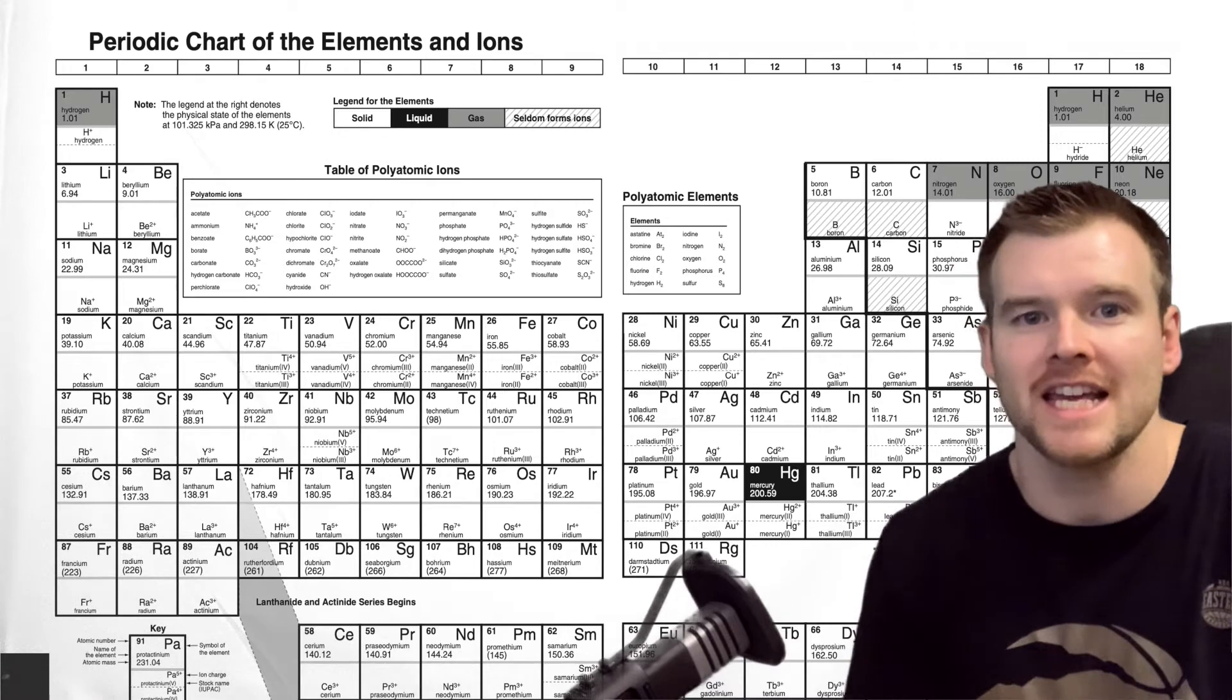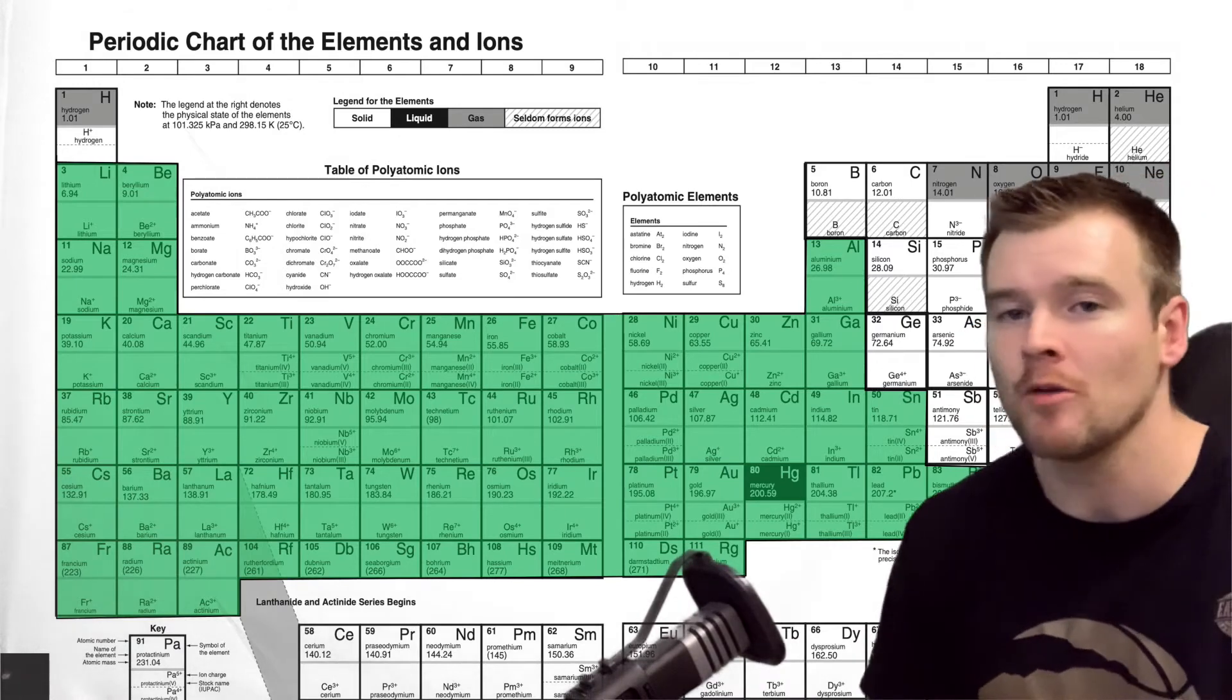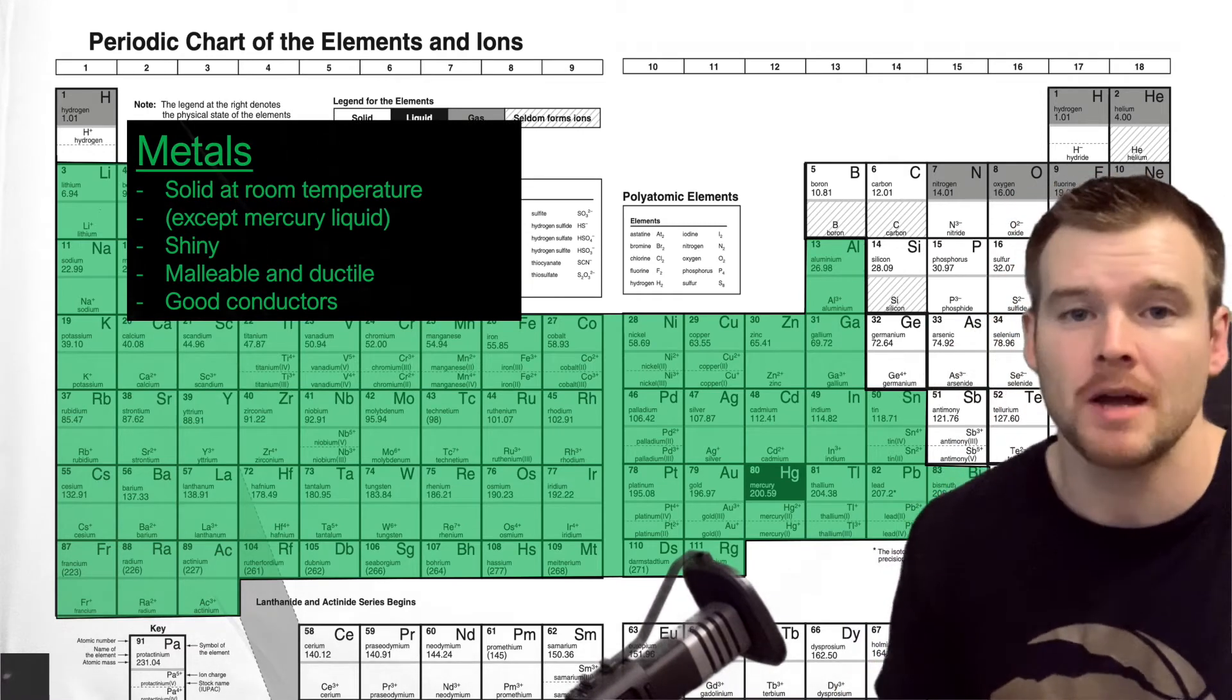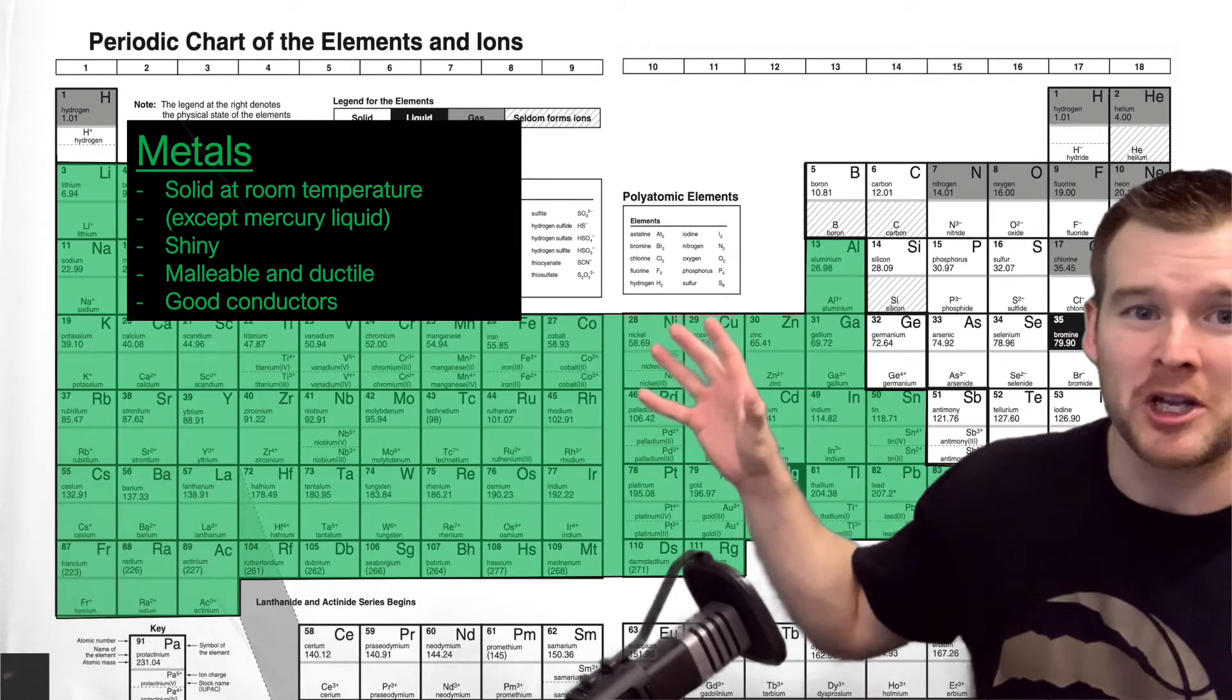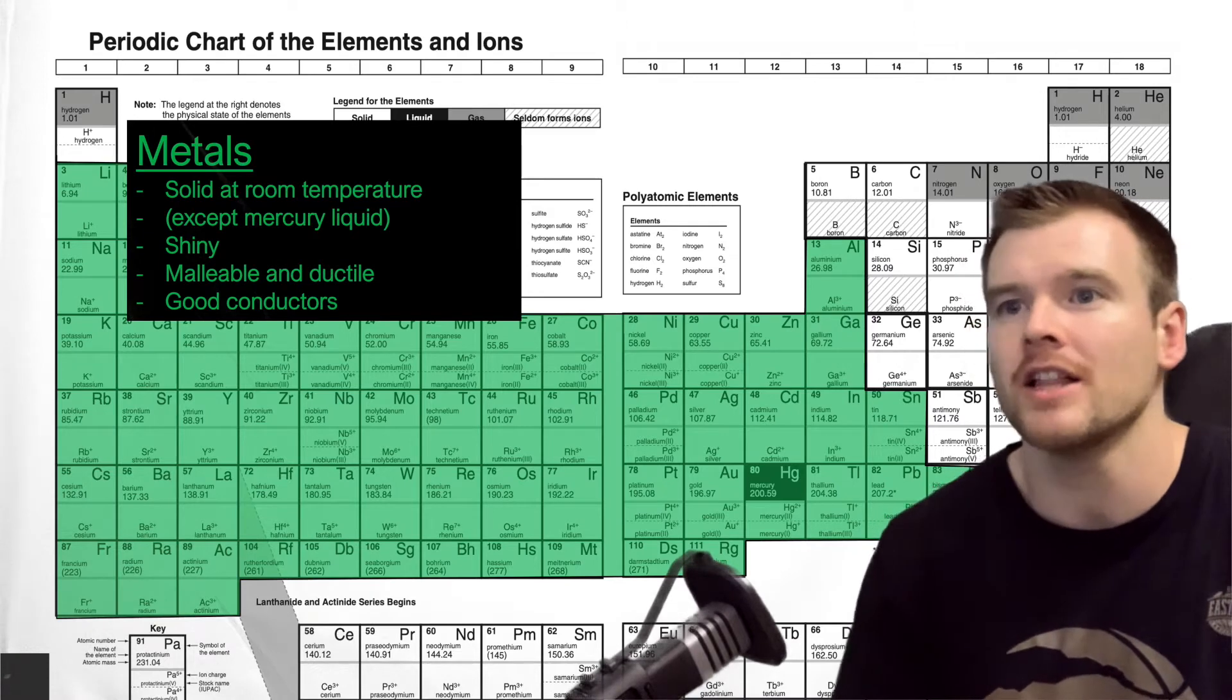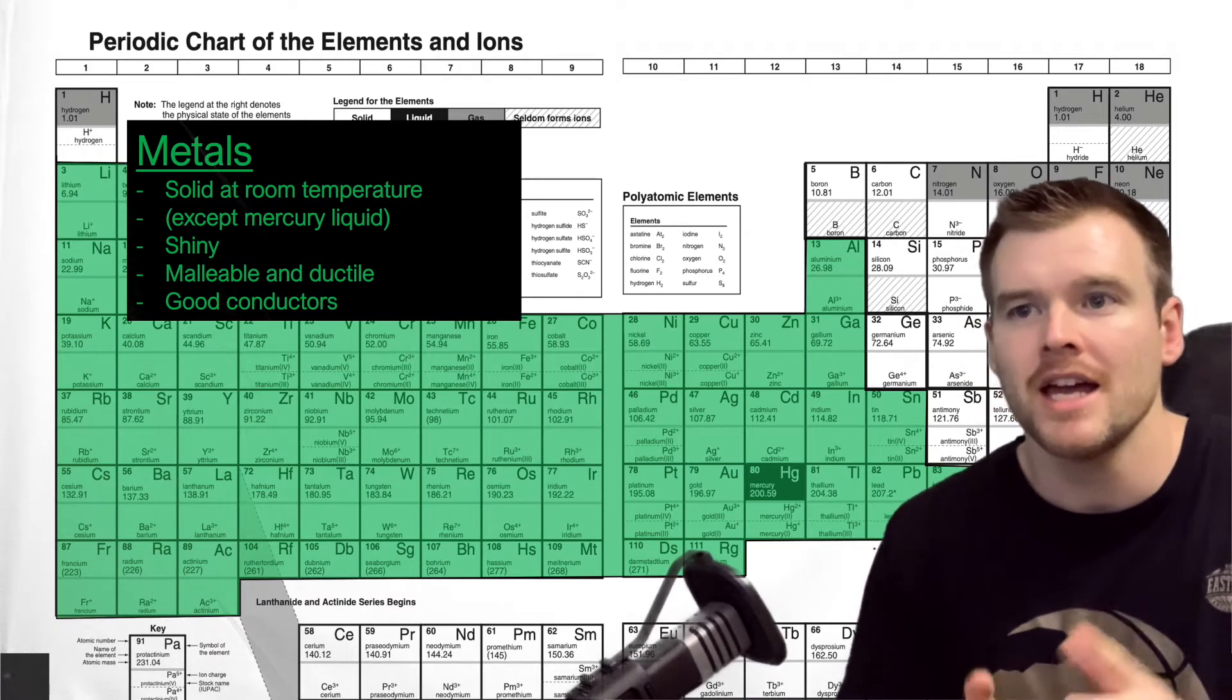So the first part I want to look at is just the big groups, and this is probably the biggest one. This green area that I've shaded in represents metals. So metals take up most of the elements. They're solid at room temperature, except mercury which is a liquid. They're shiny when they're solid, they're malleable and ductile, which means they can bend and stretch a little bit, and they're good conductors of electricity.